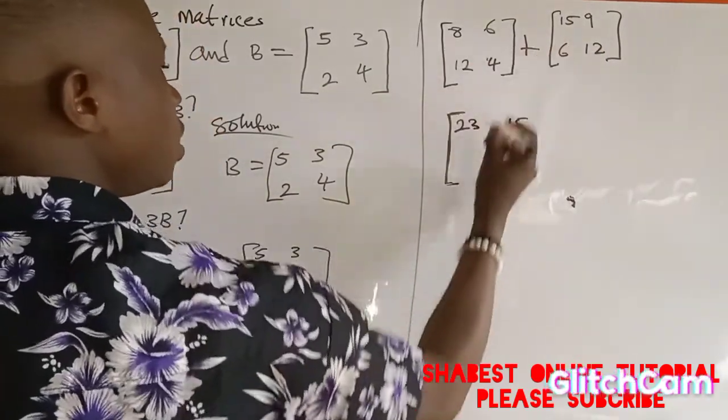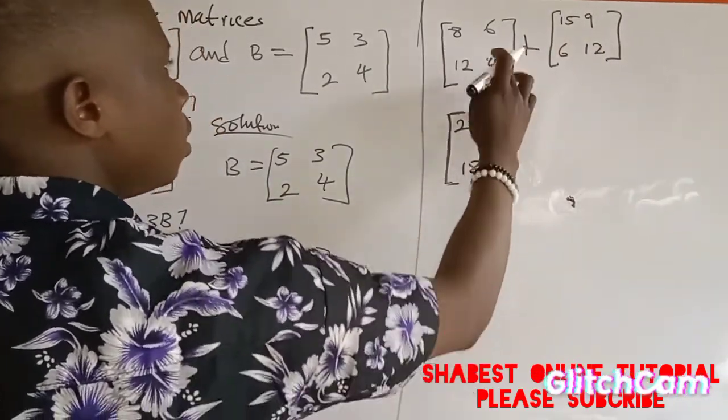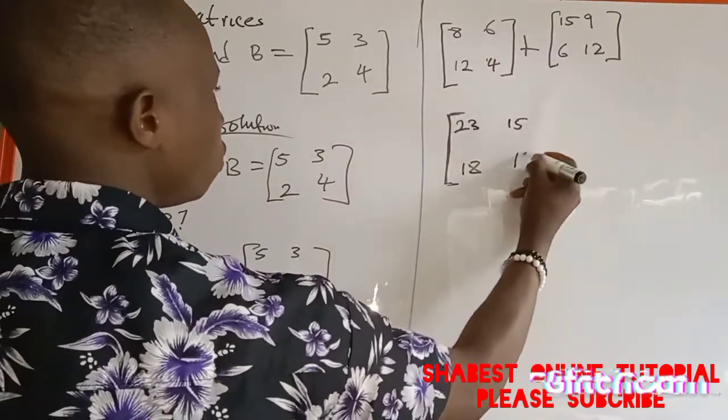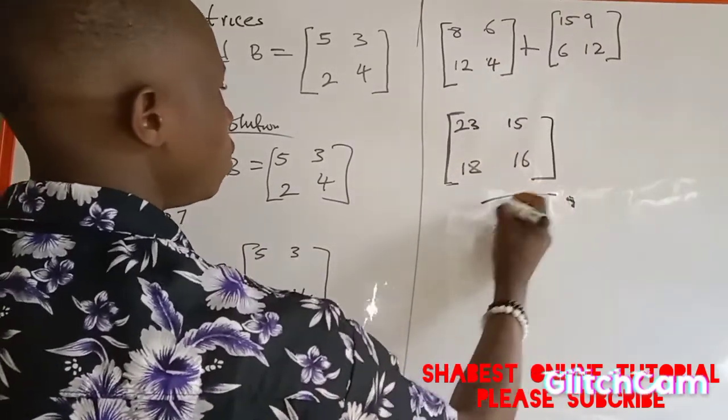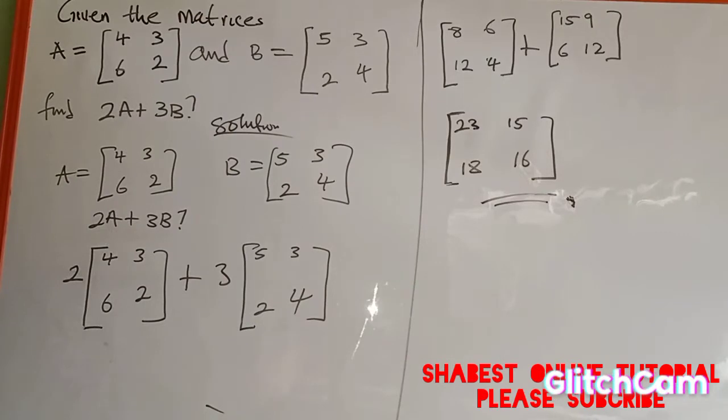12 plus 6 is 18, and 4 plus 12, which will give me 16. So this is the solution to this question on the board. Thanks for watching, and don't forget to subscribe to my YouTube channel.